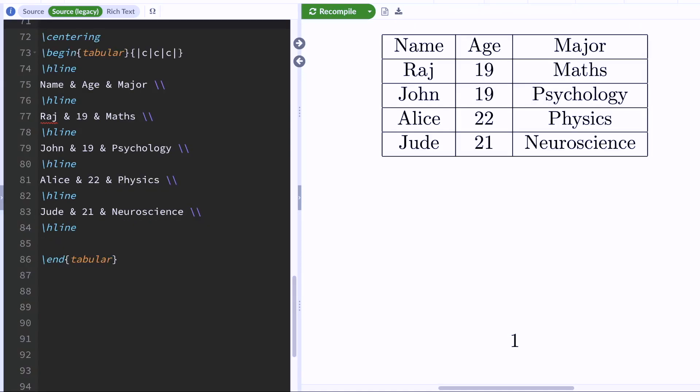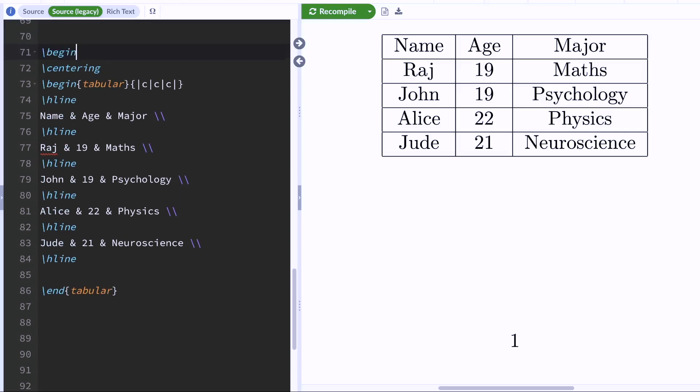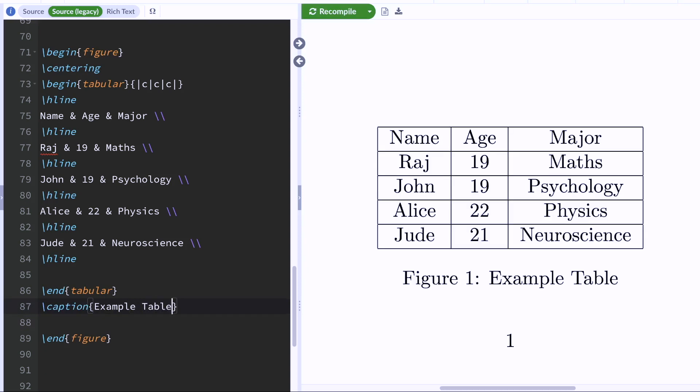Now, a lot of people want to add captions to their tables. And you can easily do that by housing all of your table code inside a figure environment. So you're going to type begin figure and end figure. And to add a caption, you're going to type backslash caption. And then let's just call this table example table. And we should get a caption right here. There we go.